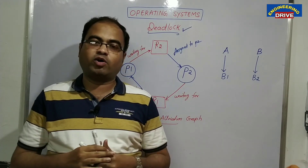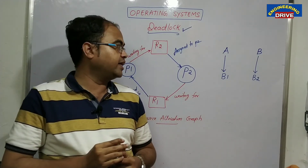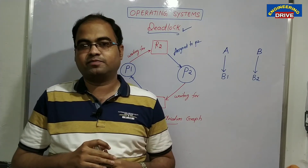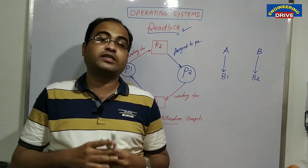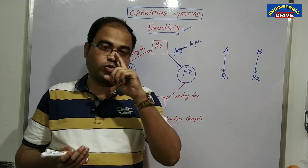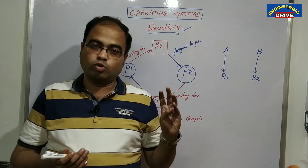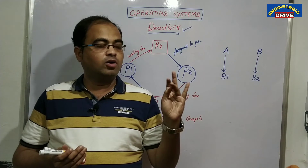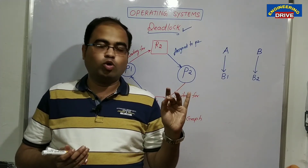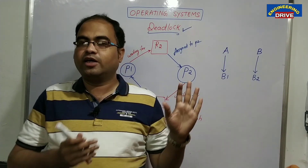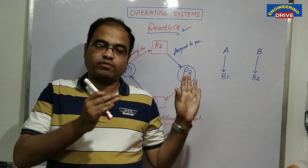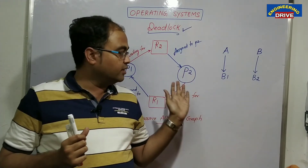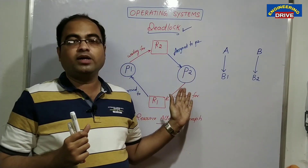Hopefully everyone has got a clearer picture of what is a deadlock and how a deadlock can occur. There are four necessary conditions for a deadlock to occur. Those four conditions are: mutual exclusion, hold and wait, no preemption, and circular wait. If all four conditions are satisfied, then deadlock will occur.